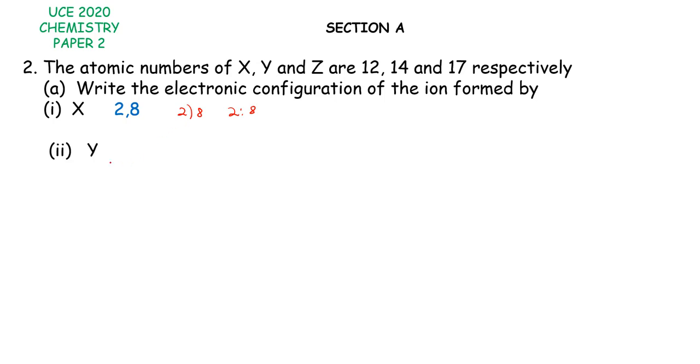The electronic configuration of the ion formed by Y. Our Y has 14 protons and electrons. So the atom of Y will have 2, 8, 4. Now there is some dilemma here because this one can lose or gain. But in this case, let's consider it to be a non-metal and it will have to gain 4 more electrons to become stable. So the ion becomes 2, 8, 8.